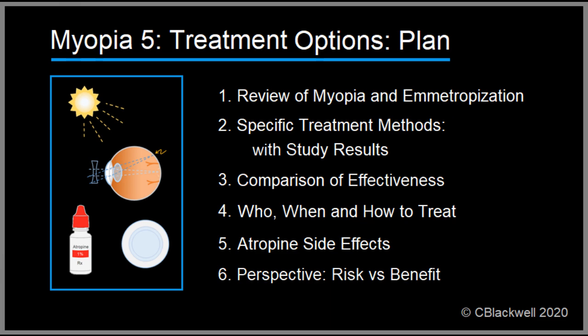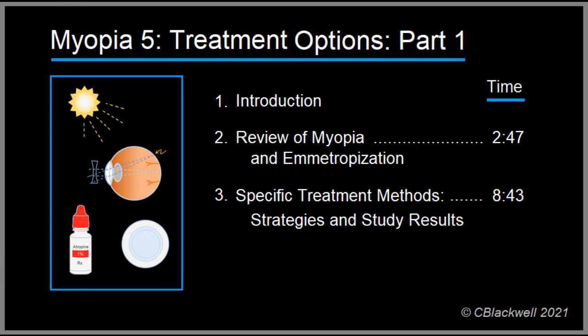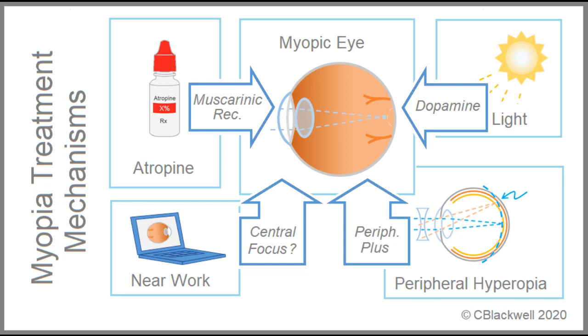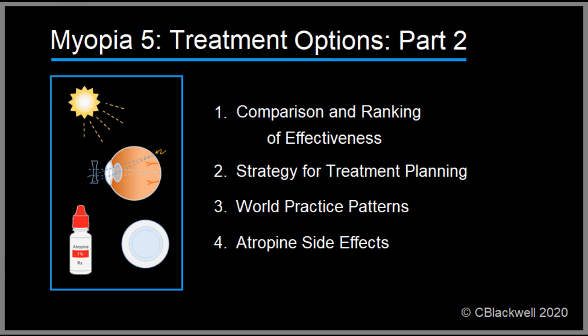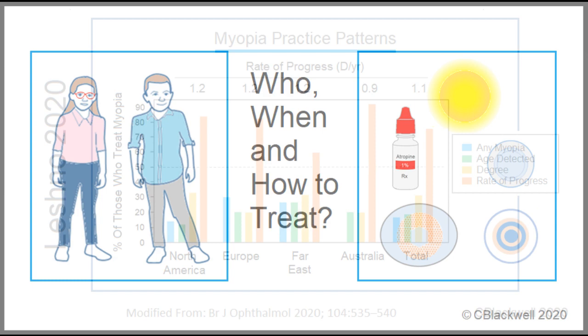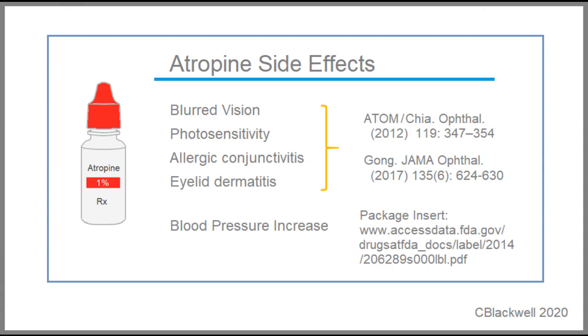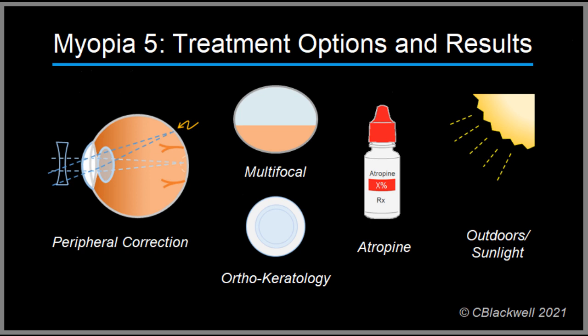Because this is a big subject we have divided it into two parts. In part one we start with a review of myopia and emetropization for those who have not seen the other videos or who want a refresher summary. If you are comfortable with those concepts you can skip ahead to the treatment section. The substance of this video is an exploration of each of the treatment methods, how they work and what are their results. In part two we start by comparing results between studies and rating them according to their effectiveness. We follow that by exploring the treatment decision, world practice patterns, and a review of atropine side effects. The methods we cover here are a step beyond static vision correction like with glasses, contacts, or refractive surgery.